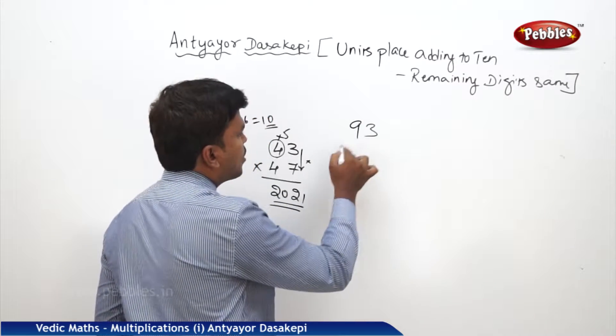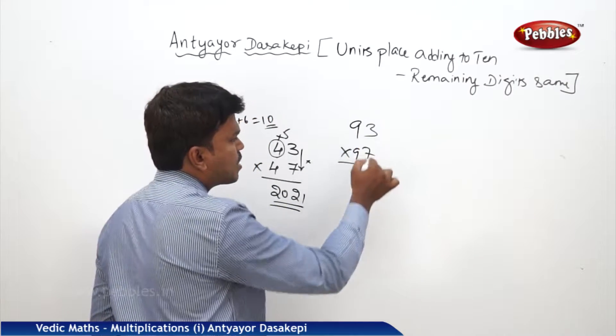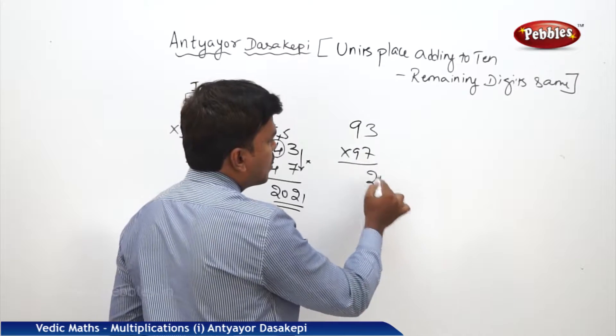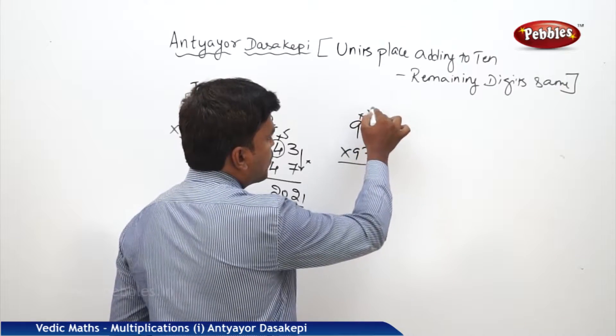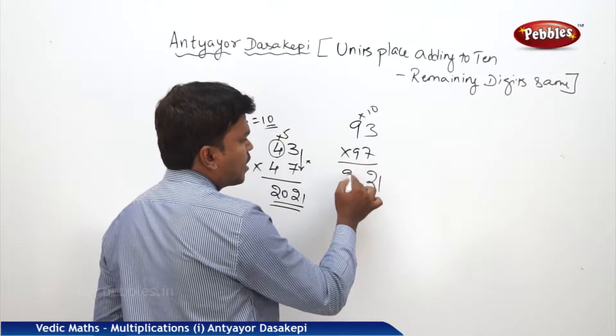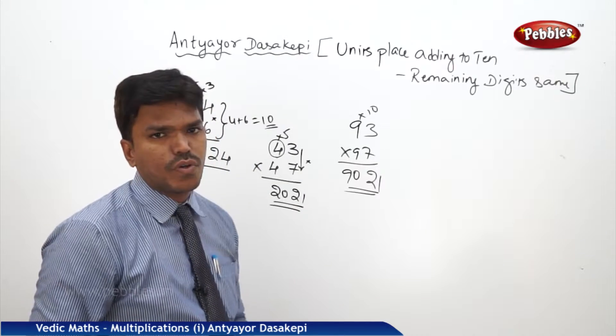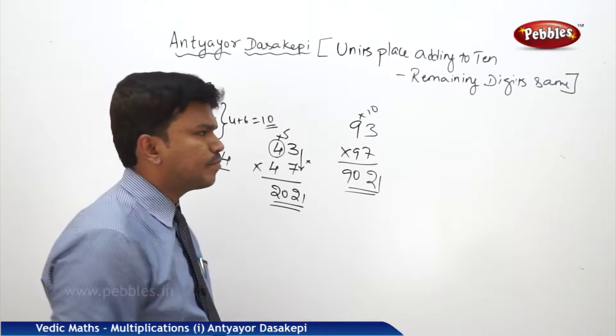One more example: I want to multiply 93 into 97. Units: 3 into 7 is 21. Remaining digit 9 multiplied with its next number 10: 9 into 10 is 90. So your answer is 9021.